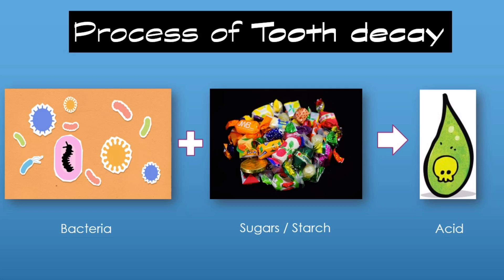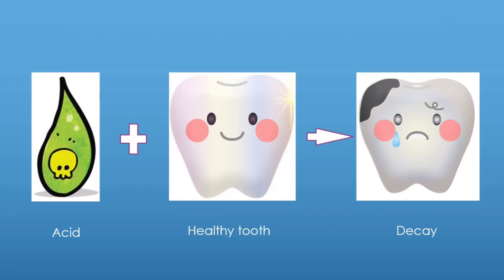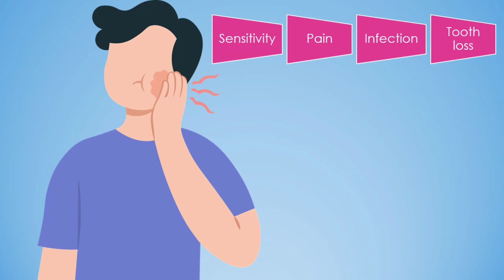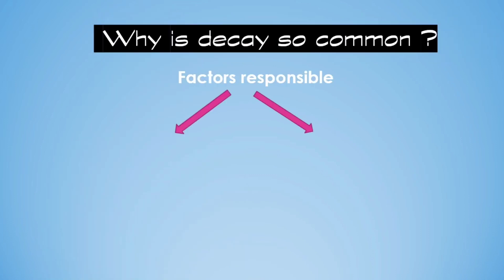Our mouth is home to hundreds and thousands of varieties of bugs. Whenever we have food, the harmful bugs will feed on the sugar in the food and release acid, which is obviously not liked by the tooth. This acid comes in contact with the healthy tooth and over time dissolves it, ultimately leading to a hole or a cavity. If dental caries is left untreated, it can cause sensitivity, pain, infection, and even tooth loss.